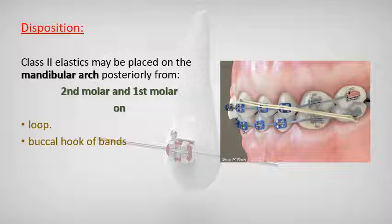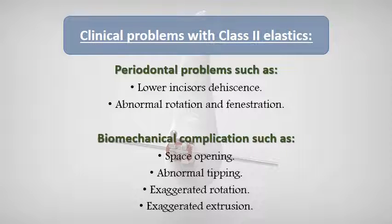Class 2 elastics may be placed on the mandibular arch posteriorly from the second molar and the first molar on loops or buccal hook of bands. Clinical problems with Class 2 elastics include periodontal problems such as lower incisor dehiscence, abnormal rotation, and fenestration, and mechanical complications such as space opening, abnormal tipping, exaggerated rotation, and exaggerated extrusion.